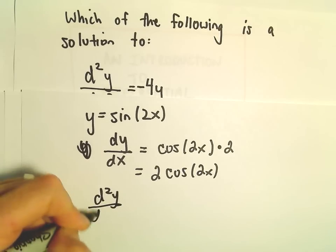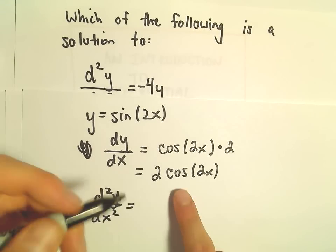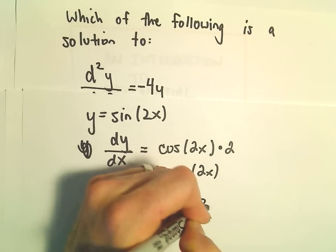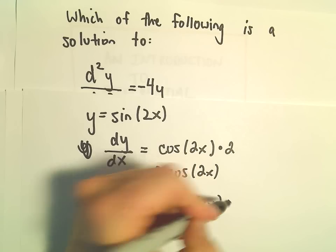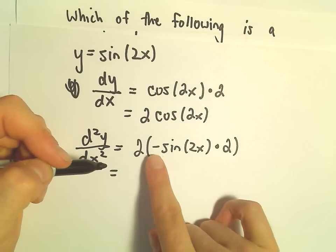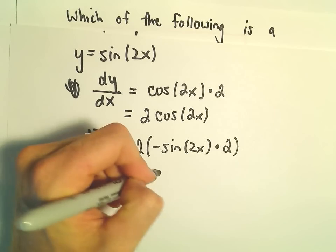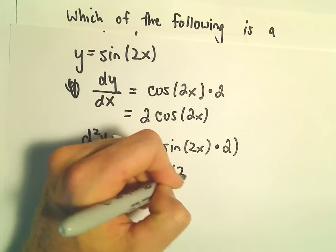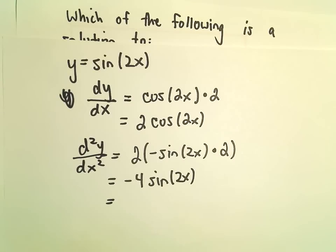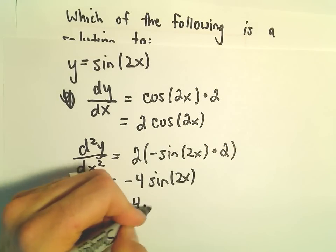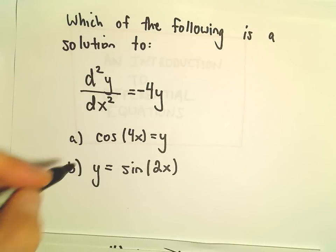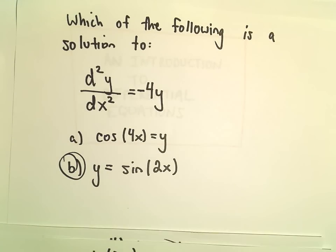The second derivative: the derivative of cosine is going to be negative sine. We leave the 2x alone, but chain rule gives us another factor of 2. That's going to give us negative 4 times sine of 2x. We can replace sine of 2x with just y, so we're left with negative 4y. That's exactly what we wanted, so part b is our solution.